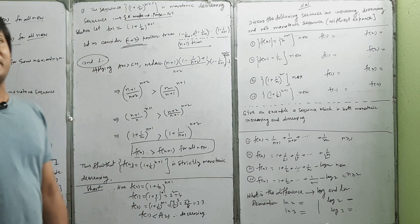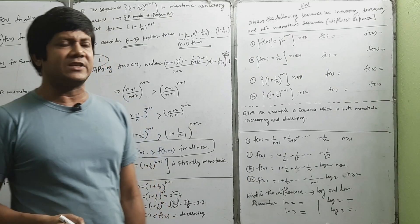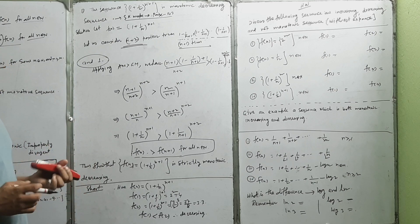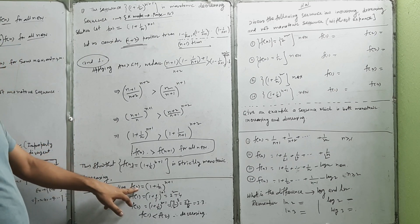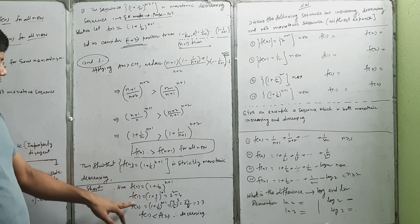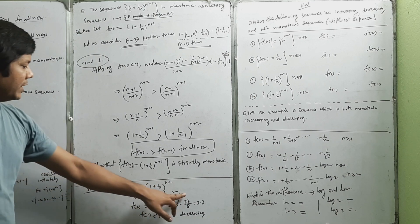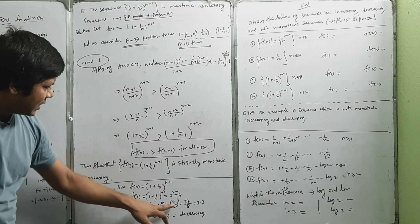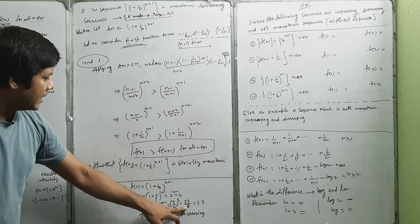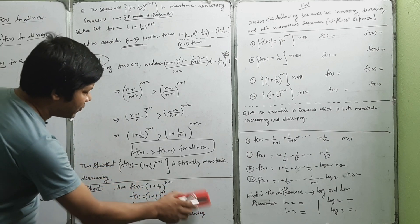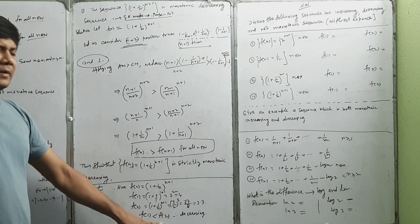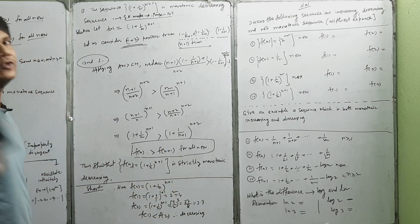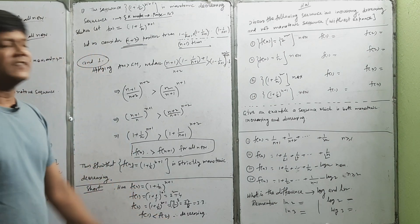Let us consider n plus 1. n plus 2 is a positive term. The first value: f equals 8. f1 is 2, f2 is 2. The calculation gives 27 by 8, that is 3, that is 4. If f1 is 2 and f2 is 1, this is a decreasing sequence.